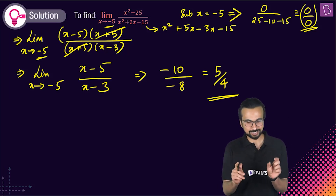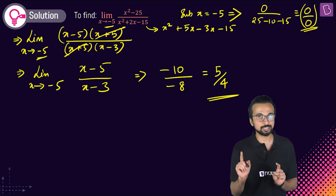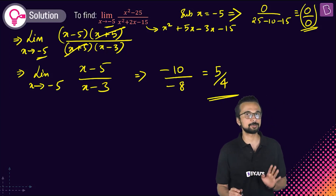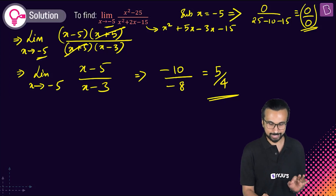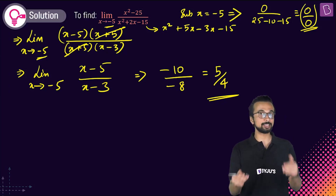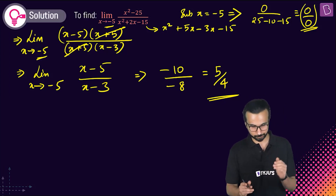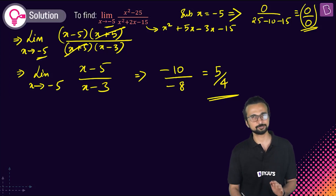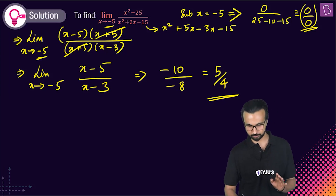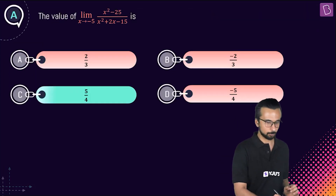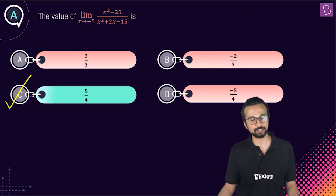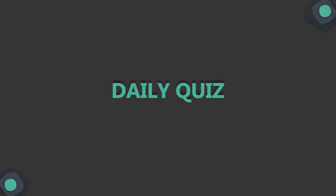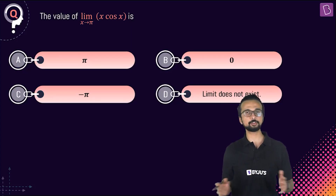So what we needed to do was factorize, identify (x+5) as the reason for the indeterminate form in both numerator and denominator, cancel it out, and substitute directly. Final answer: option C, 5 by 4.